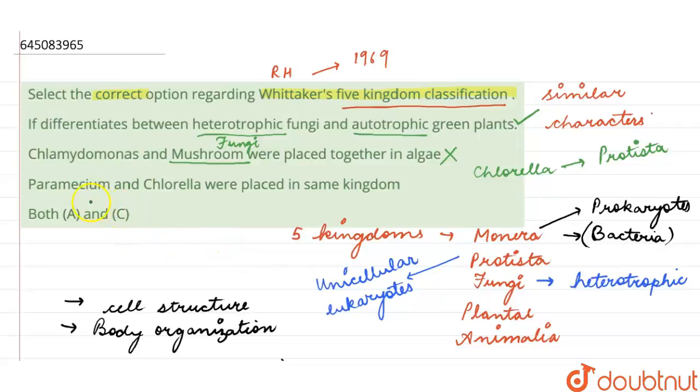And third option given here is: Paramecium and Chlorella were placed in same kingdom. So this is also true. Chlorella is a type of single-celled algae, yet it was placed along with Paramecium and Amoeba in the kingdom Protista based on their various characteristics which were similar to each other. So this statement is also correct. So our correct option will be both A and C, that is option four is the answer here.